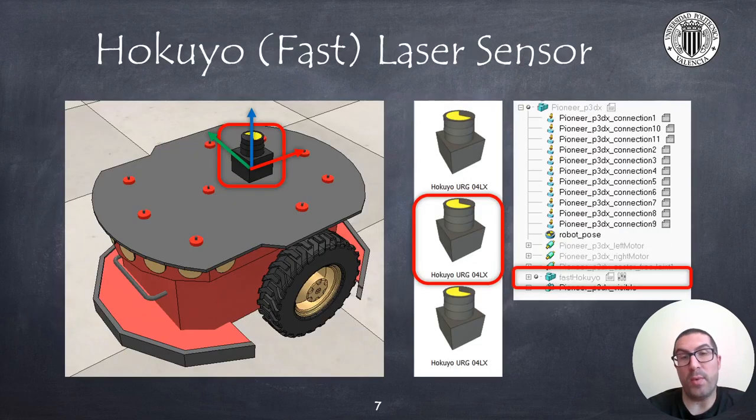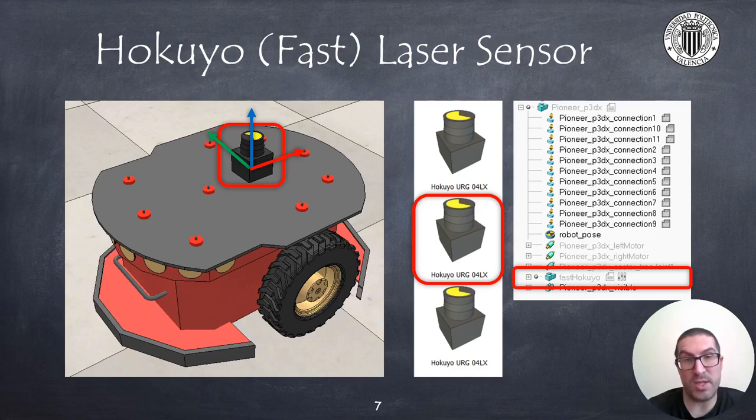In addition to this we will add a Hokuyo URG-04LX laser sensor. You will find this sensor inside the sensors category in CoppeliaSim model browser. Note that there are three different models for the same sensor and I have used the second one. So once you add it to the scene the sensor appears as fastHokuyo in its name. You must place this sensor just above the robot also aligned with the wheel axis and make it child of the robot. Also take into account that the sensor orientation must cover the front side of the robot as shown in the figure.